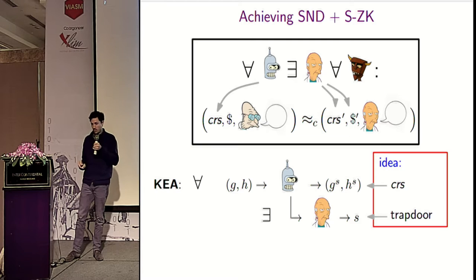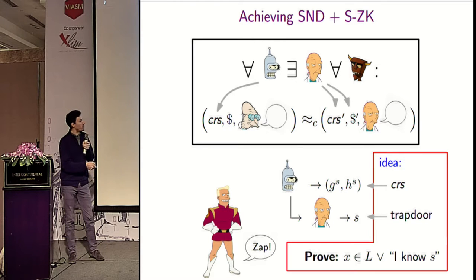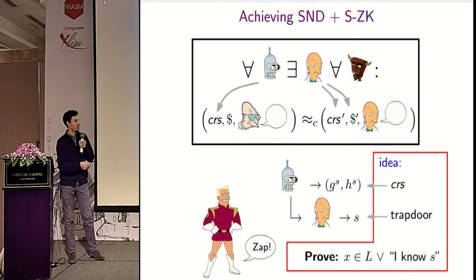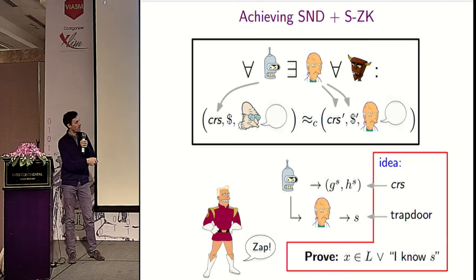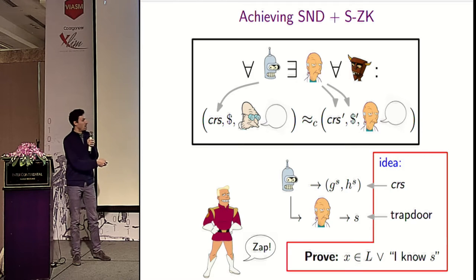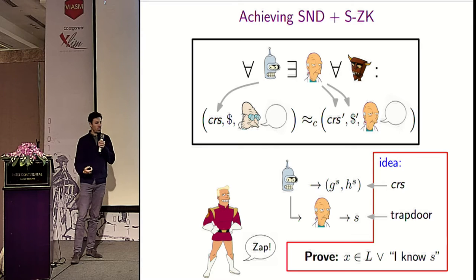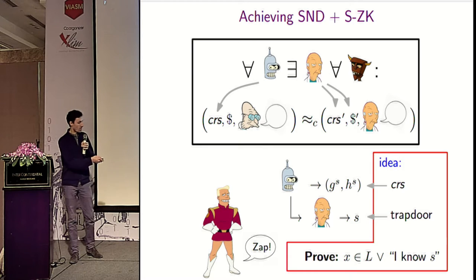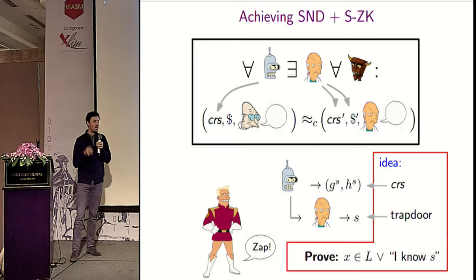The simulator proves statements of the form 'either X is in the language, or I know some s.' Since the simulator can extract s, it can simulate proofs. We use SAPs for these proofs because we only need witness indistinguishability to ensure simulated and real proofs are indistinguishable, and moreover we do not need an extra CRS.